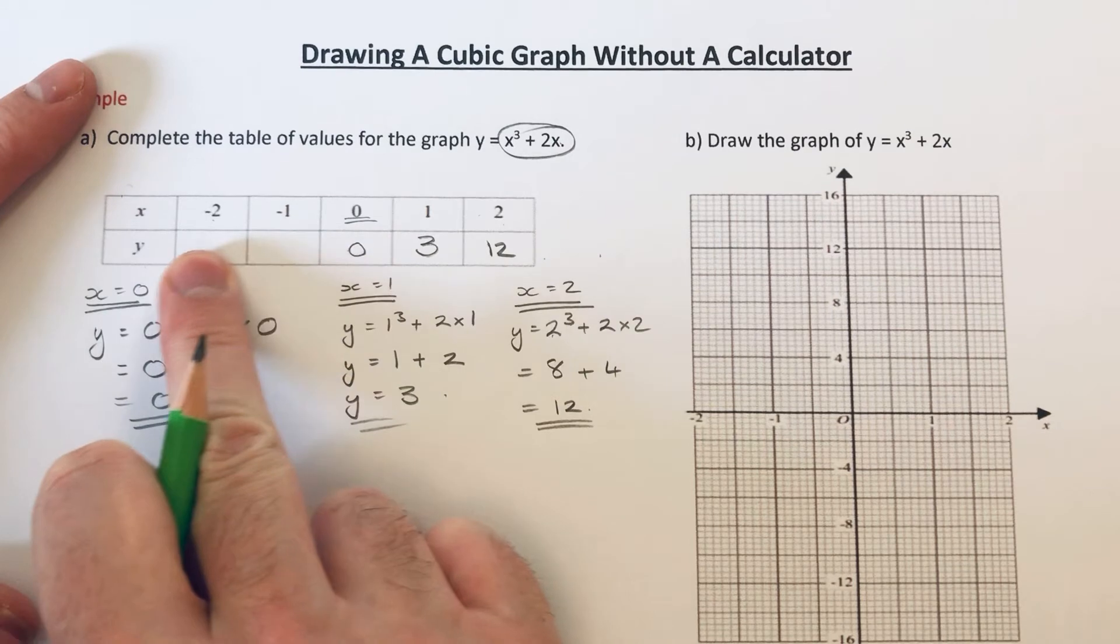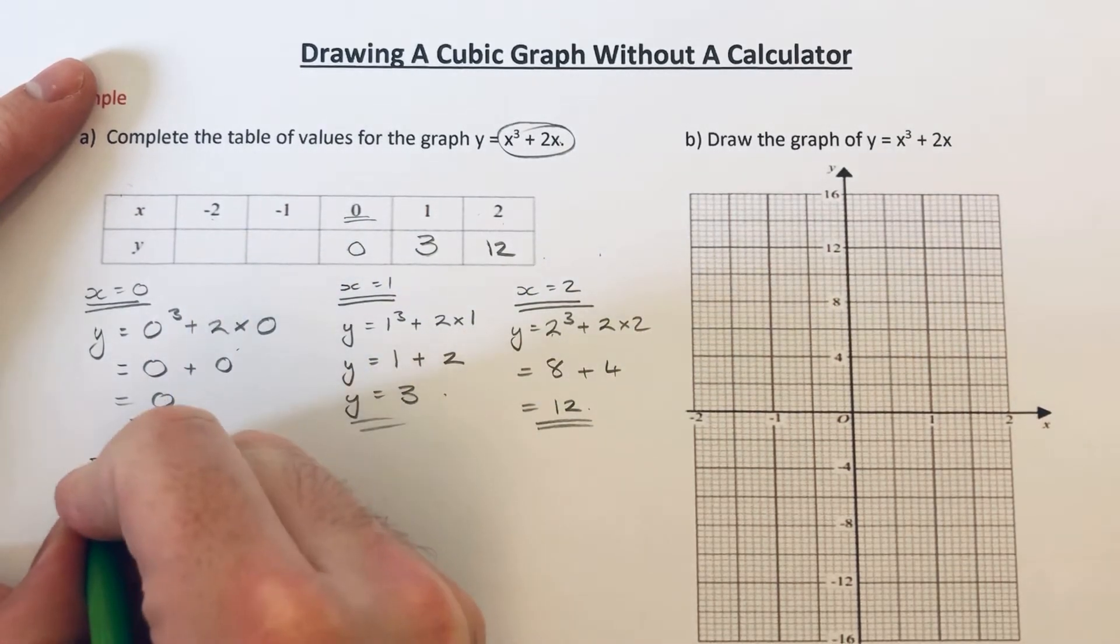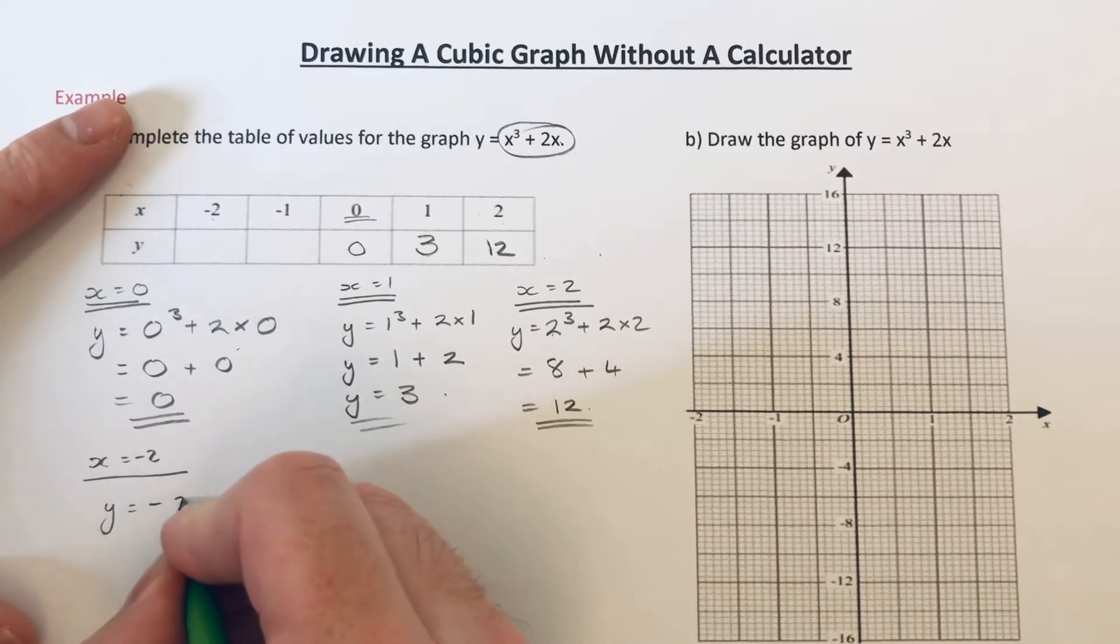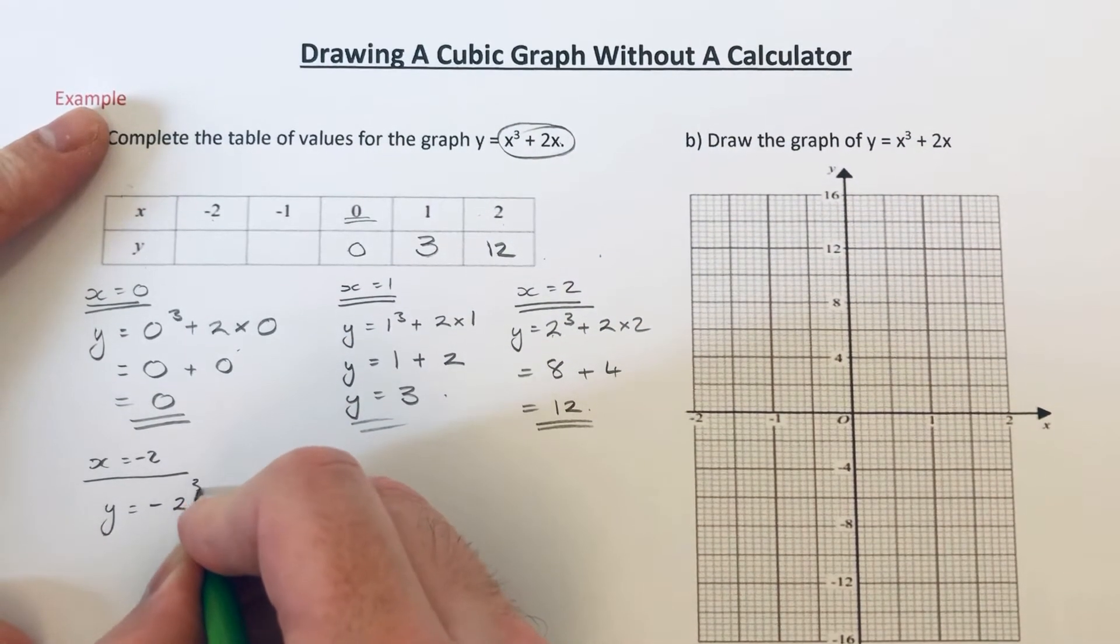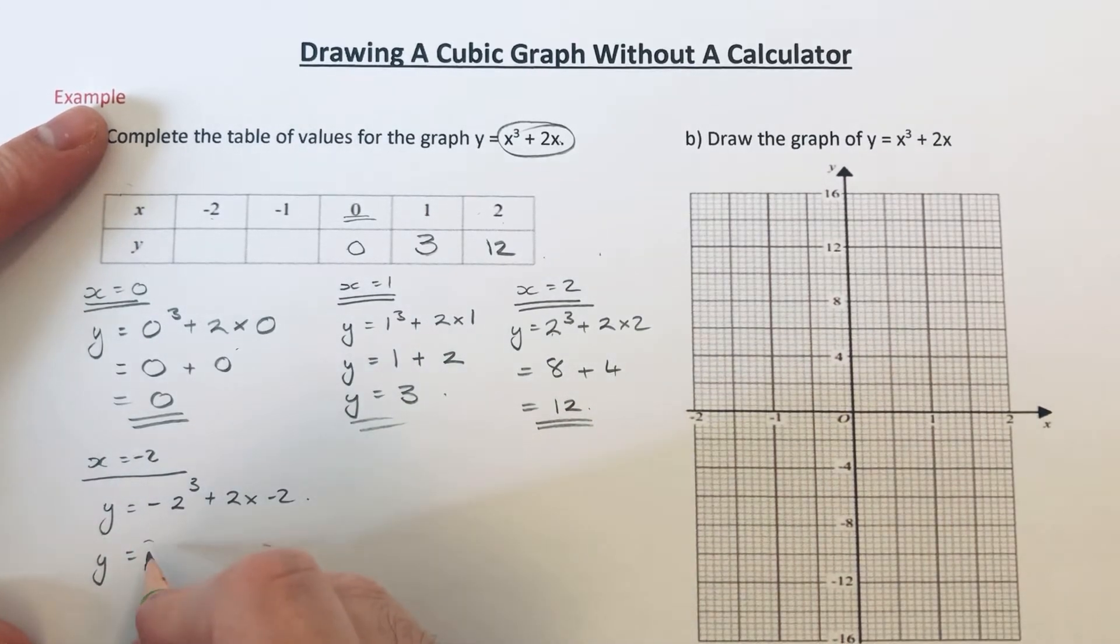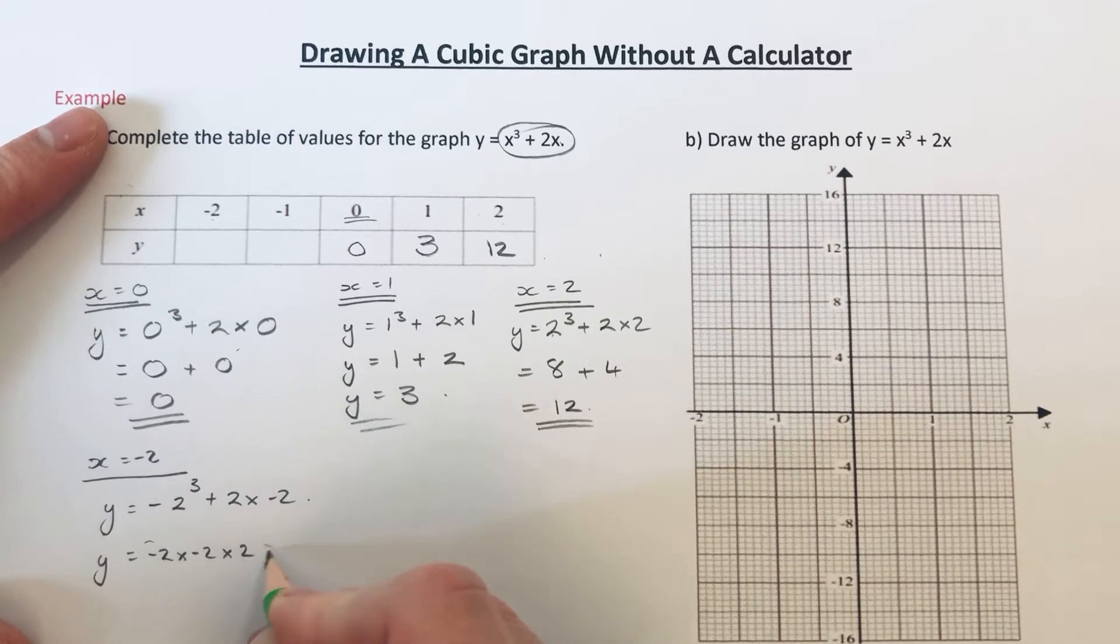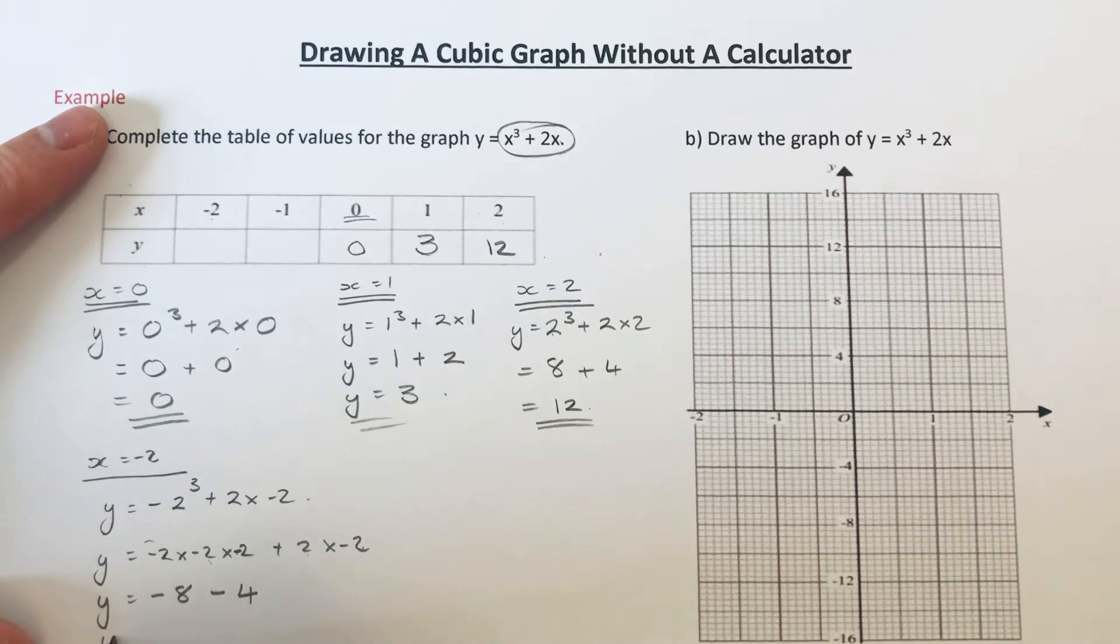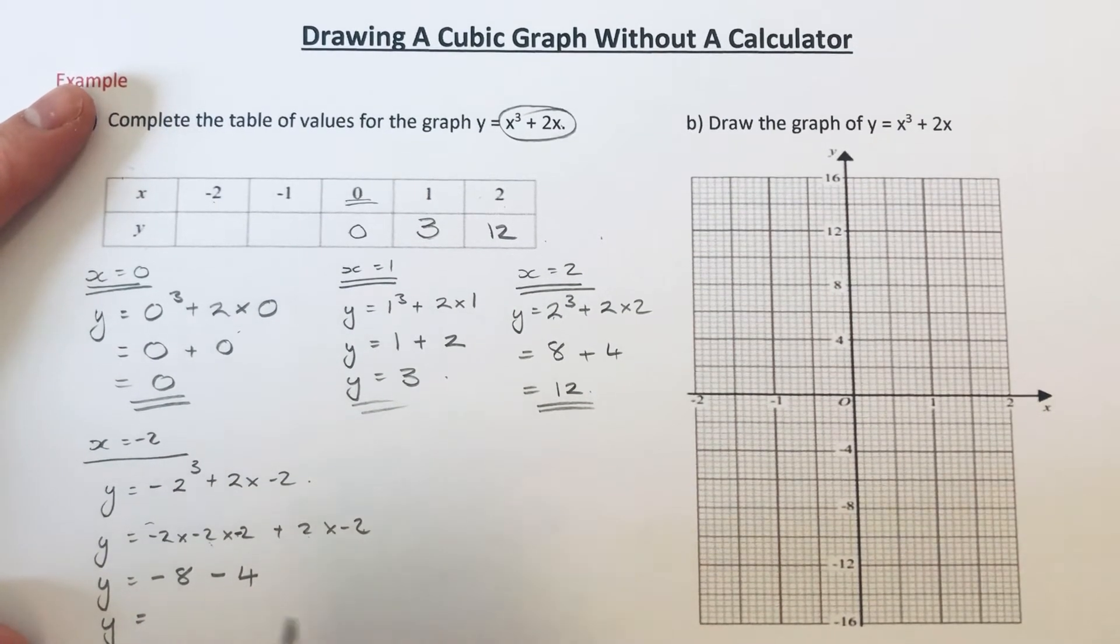So let's go back and work out our negative coordinates next. So let's do x equals minus 2. So again, if we substitute minus 2 into the equation. So minus 2 cubed then is minus 2 times minus 2 times minus 2. So minus 2 times minus 2 is 4. Times minus 2 again is minus 8. 2 times minus 2 is minus 4. So that will give us minus 12.